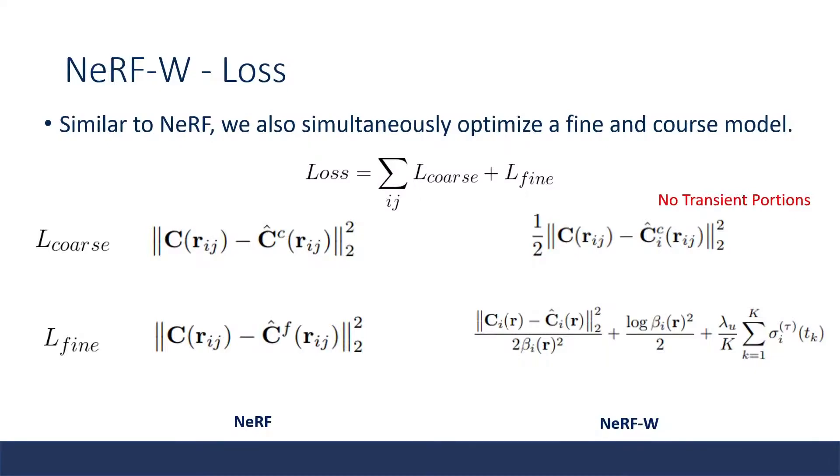In regards to the loss, just like NeRF, NeRF-W also simultaneously optimizes a coarse and fine model. Both of these are reconstruction losses that use the L2 distance between the ground truth color C and the predicted color C-hat. For the coarse loss, NeRF-W has the exact same loss as NeRF, because NeRF-W does not use any of the transient portions and only uses the appearance vector change for the coarse model. The main difference lies in the fine loss.